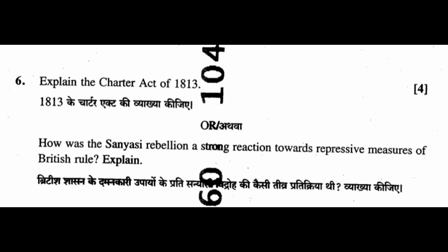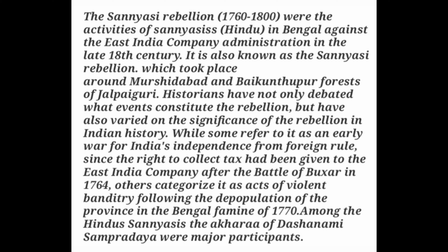Question 6 (alternate): How was the Sanyasi rebellion a strong reaction towards repressive measures of British rule? The Sanyasi rebellions were the activities of Sanyasis in Bengal against the East India Company administration in the late 18th century, also known as the Sanyasi rebellion, which took place around Mursidabad and Baikuntpur forest of Jalpaiguri. Historians have debated what events constitute the rebellion and its significance in Indian history. Some refer to it as an early war for Indian independence from foreign rule. Since the right to collect tax had been given to the East India Company after the Battle of Buxar in 1764, others categorized it as acts of violent banditry following the depopulation of the province in the Bengal famine of 1770. The Hindu Sanyasis and the Akhada of the Sanami Sampradaya were major participants.